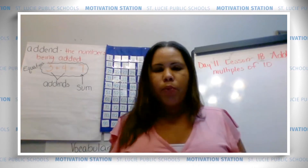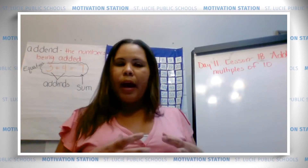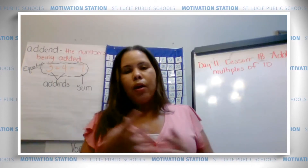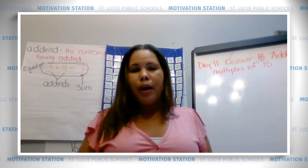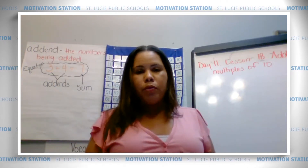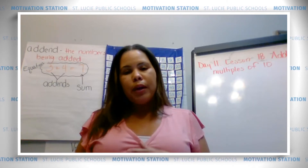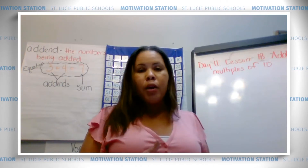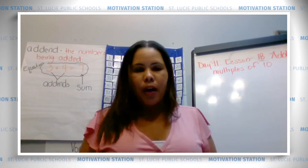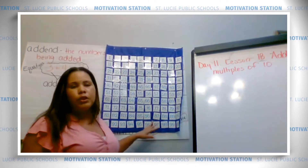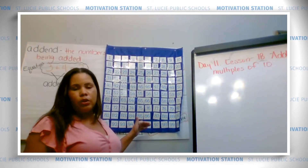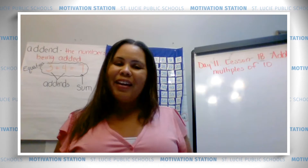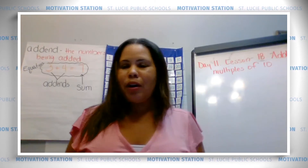You guys have been working hard. Remember on week one, we started with our 10 frame and counting numbers up to 10. Then we added a second 10 frame and put numbers in as spillover, so we went up to 20. Then we moved to our 100 frame to see spillover up to sums of 99. From there we moved to our 100 chart which shows our digits, and we've just been moving right along.